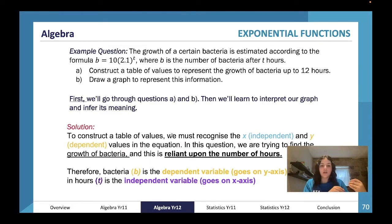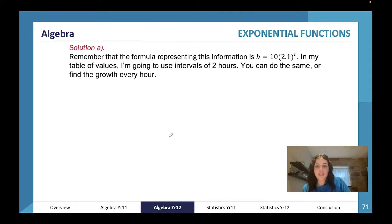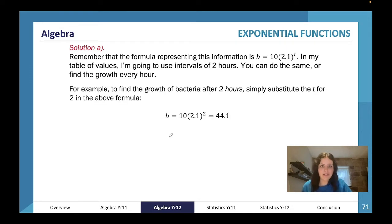We're looking for the growth of bacteria, which is dependent upon the number of hours. Therefore, the bacteria growth is the dependent variable; time, which is just going to pass regardless, is independent, so it goes on the x-axis. A good way of thinking about this is HIV: horizontal independent variable. The hot tip here is that the power is usually the x value.